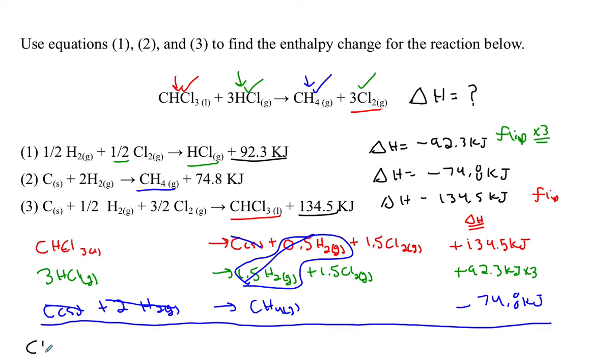So the final answer is going to be one trichloromethane plus three units of hydrogen chloride gas is going to produce my unit of methane, plus one and a half chlorine and one and a half chlorine gives me my three units of chlorine gas.